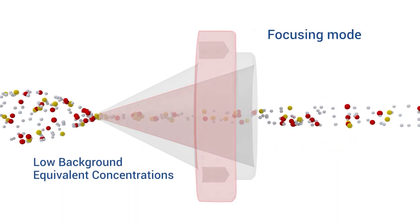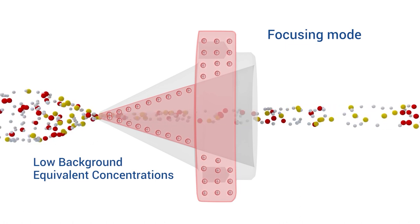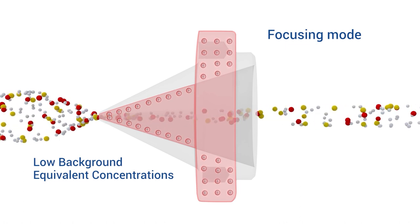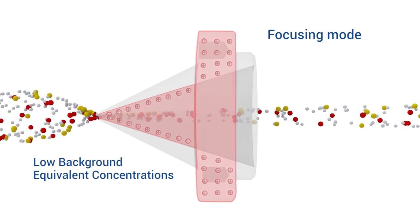In focusing mode, improved background equivalent concentrations are achieved thanks to three pumping stages and the elimination of surface deposits and ion sputtering, reducing the effects of high total dissolved solids.